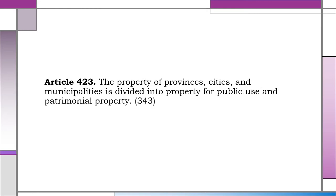Article 423. The property of provinces, cities, and municipalities is divided into property for public use and patrimonial property. Properties of political subdivisions are either property for public use or patrimonial property. Properties of political subdivisions for public use cannot be alienated as such and may not be acquired by prescription, while properties of a political subdivision which are patrimonial in character may be alienated and may be acquired by others through prescription.